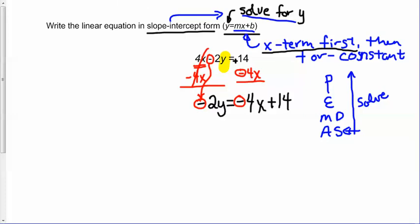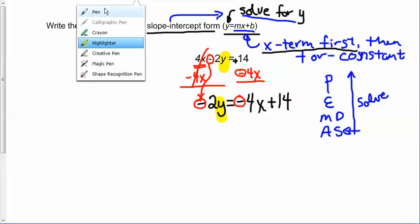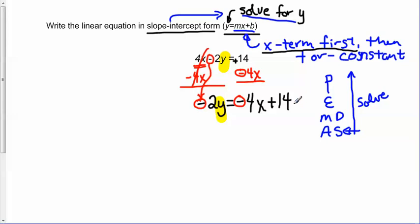We're getting closer to getting the y by itself, but it's not quite alone yet. We're trying to get the y alone, but right now it's got that negative 2 holding on to it. We want to ask ourselves, how is that negative 2 holding on? Notice this is negative 2 times y.